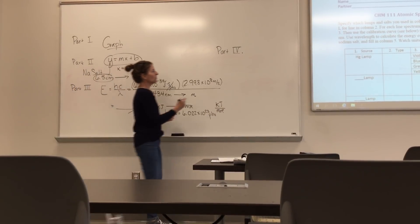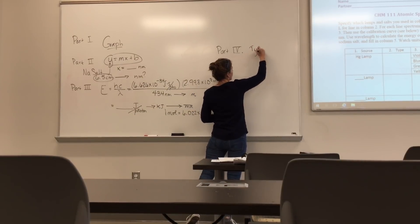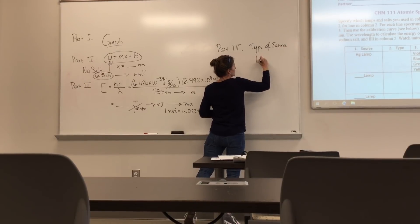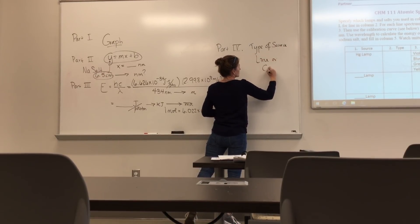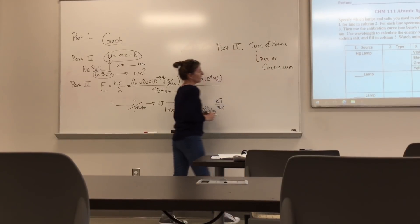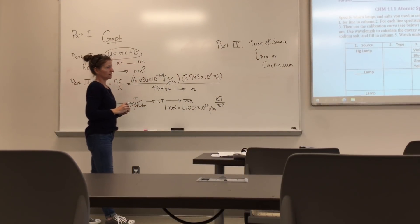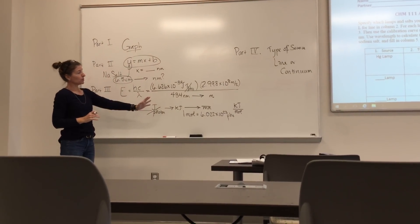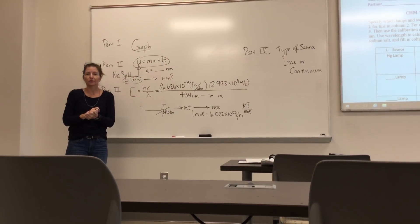So in part 4, you're going to give the type of source that you saw. And that's essentially going to be one of two, line or continuum. Either one. And you can shorthand it for L or C. That's fine. All right? So that's your full lab report. And I'll see you the following week.